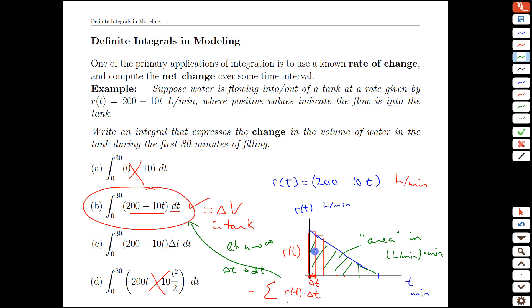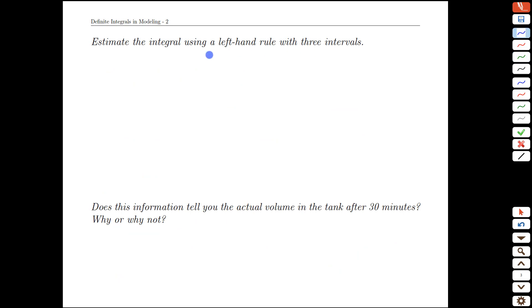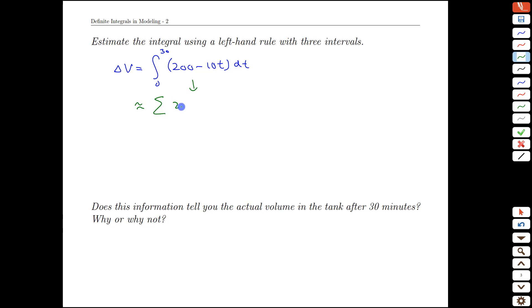All right, with that in mind, let's do an estimate of what this value would be. To estimate that value, let's start with the exact integral from 0 to 30 of 200 minus 10T times DT and we're actually going to take a step back and say that's approximately equal to a sum of 200 minus 10Ti kind of things here, delta T. What are the values we're talking about here?